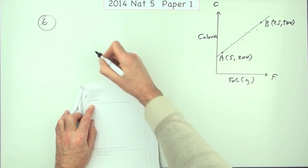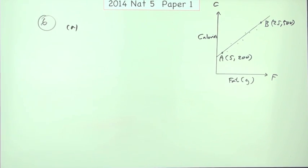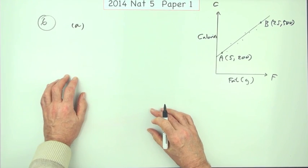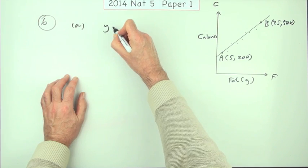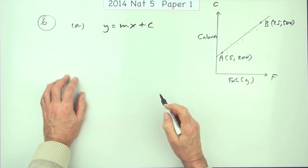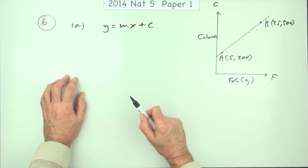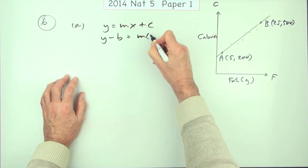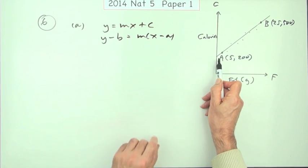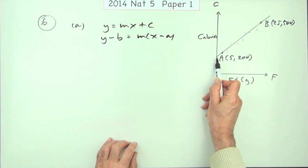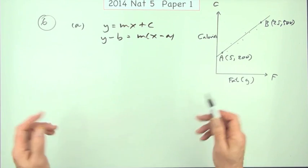First bit, find the equation of the line of best fit in terms of F and C. So, line of best fit then. Well, there's two ways of getting the equation of a line. You've got two options. You can either go for Y equals MX plus C, which is the appropriate one to use if you know where it cuts the vertical axis, or there's Y minus B equals M times X minus A, which is the appropriate one to use when you don't know where it cuts the vertical axis, when the other two points are somewhere else. So that's obviously the one I'm going to use here, well first of all anyway.